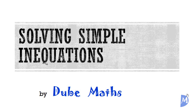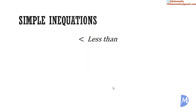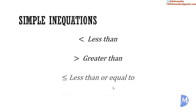Solving simple inequations. In the examples of simple equations in the previous video, we knew the exact relationship of the unknown, and we proceeded to determine the unknown exactly. Sometimes, what we have is a relationship that isn't exact. Instead of an equal sign, we have a less than sign, a greater than sign, a less than or equal to sign, or a greater than or equal to sign.